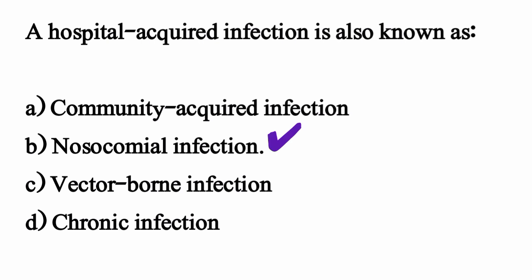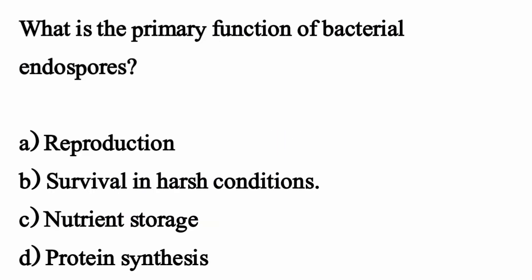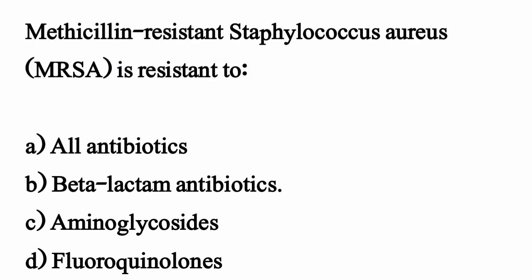What is the primary function of bacterial endospores? The correct option is option B: survival in harsh conditions. Methicillin-resistant Staphylococcus aureus, MRSA, is resistant to — the correct option is option B: beta-lactam antibiotics.